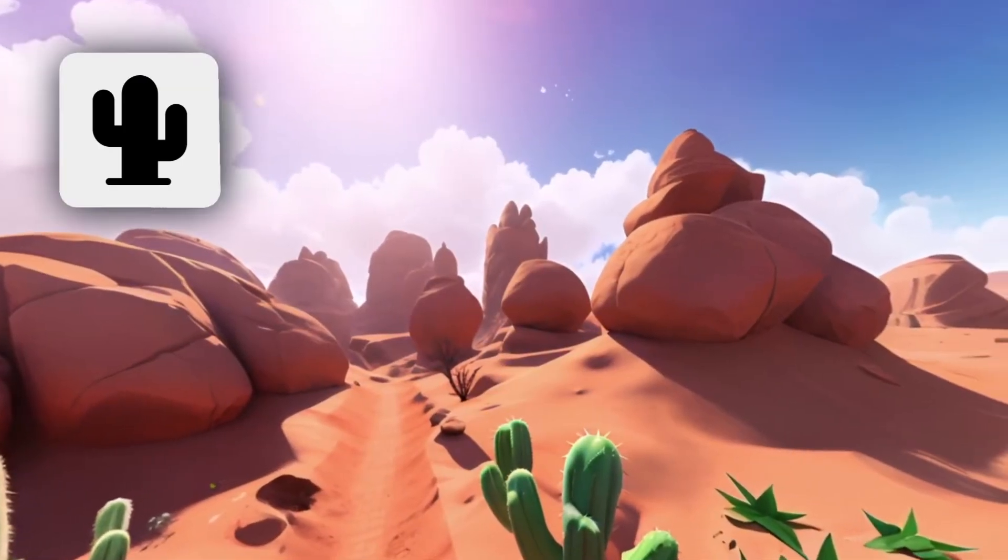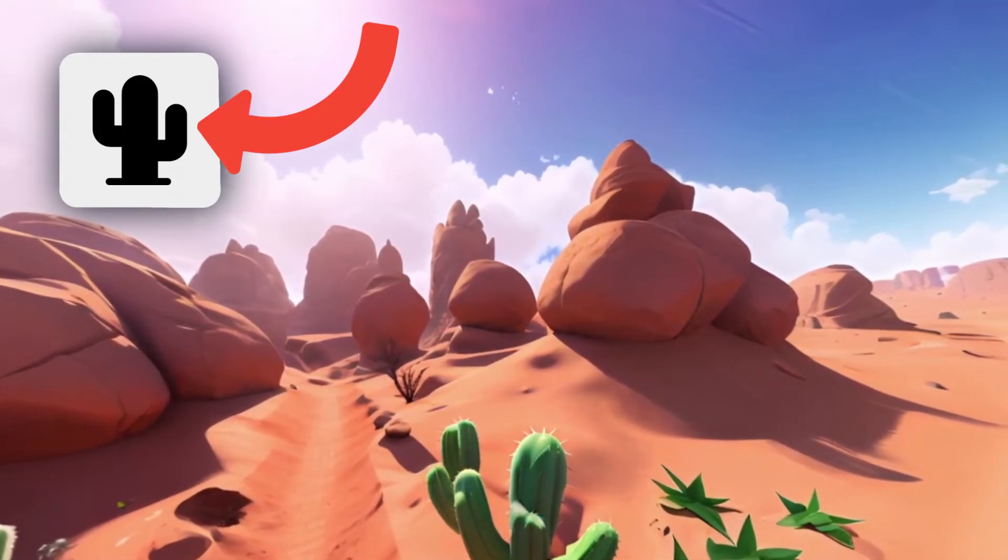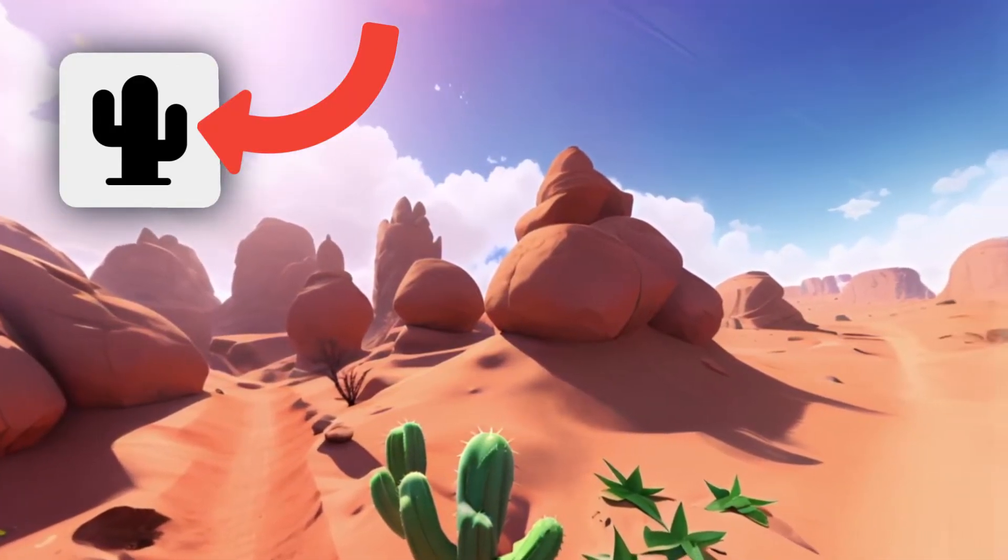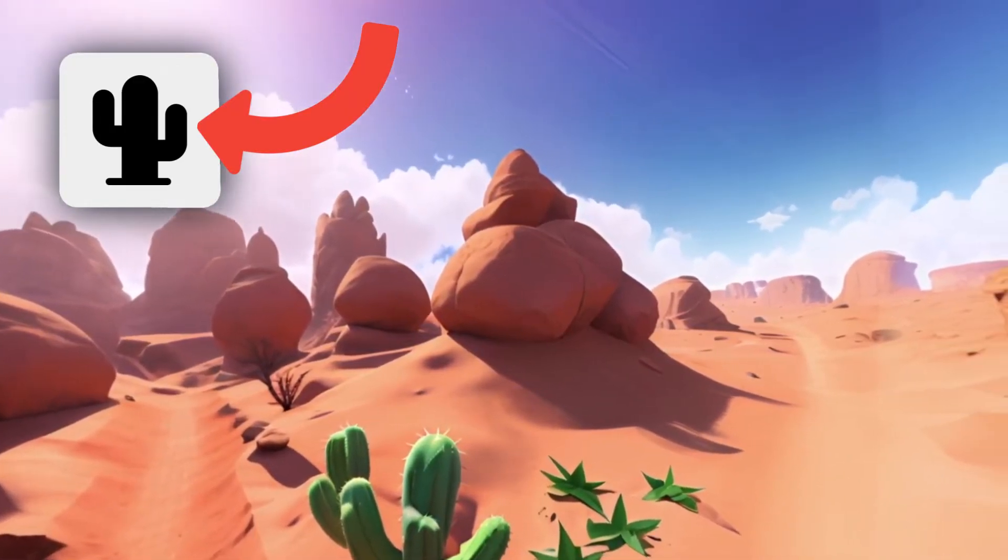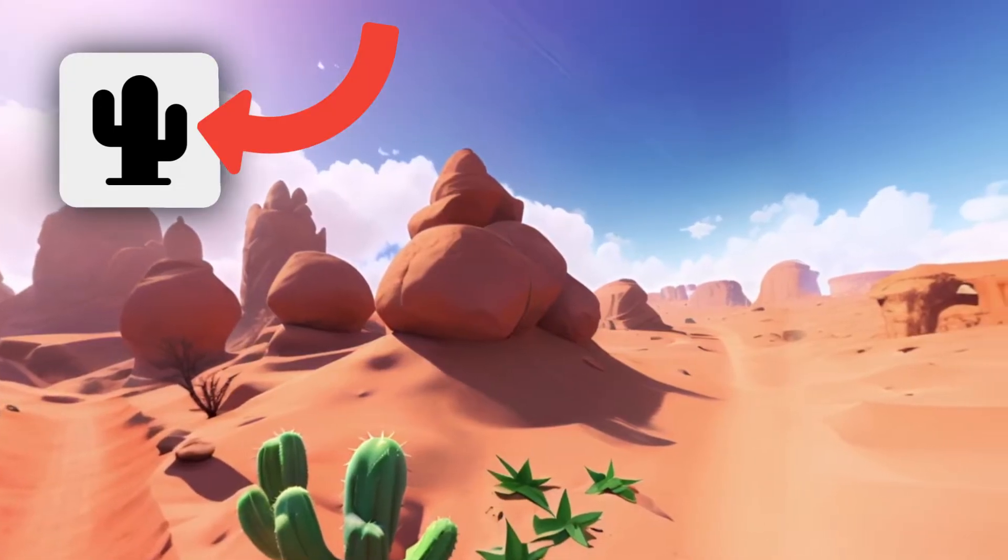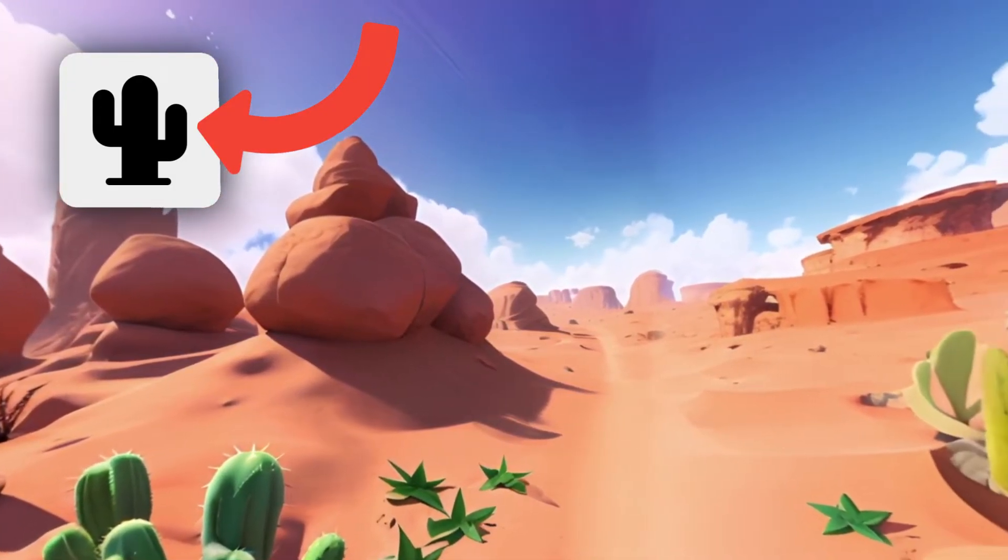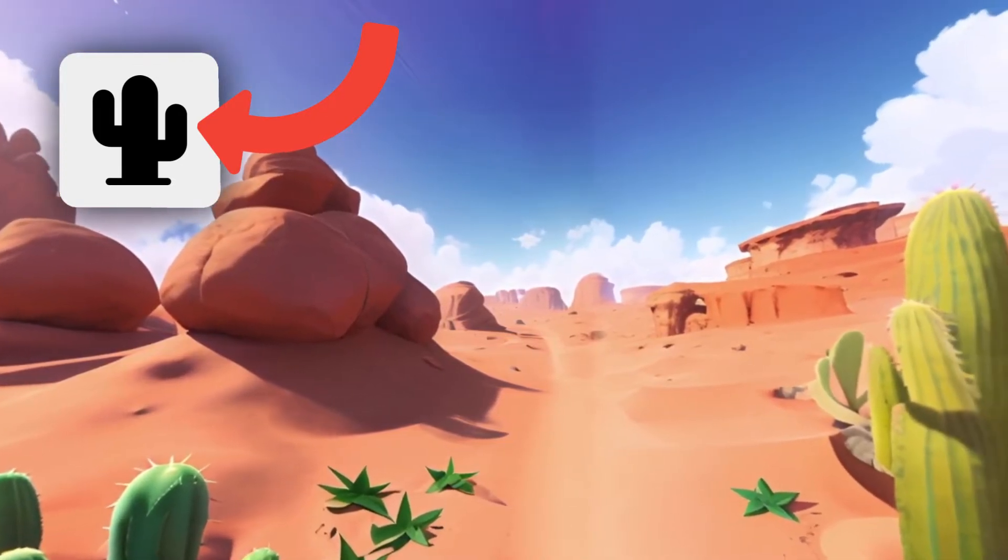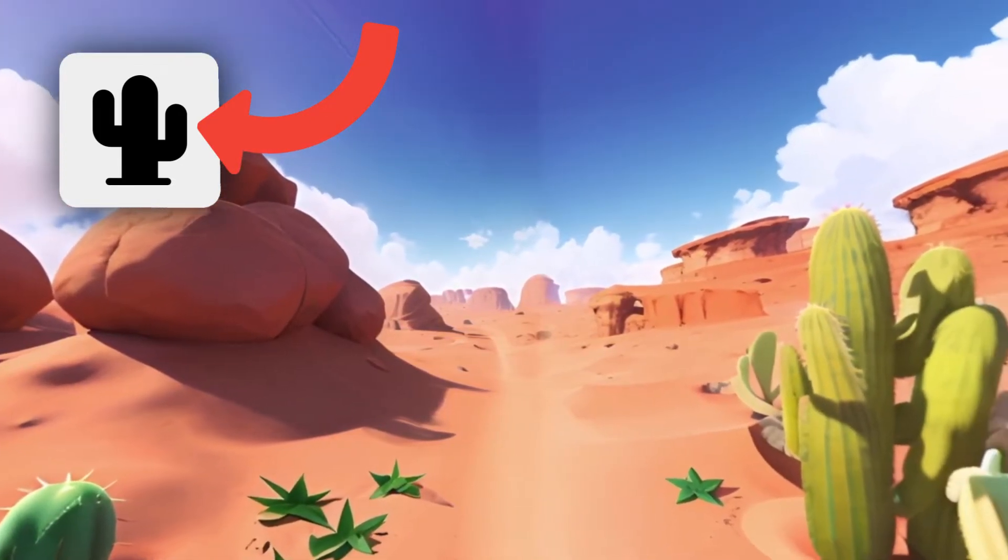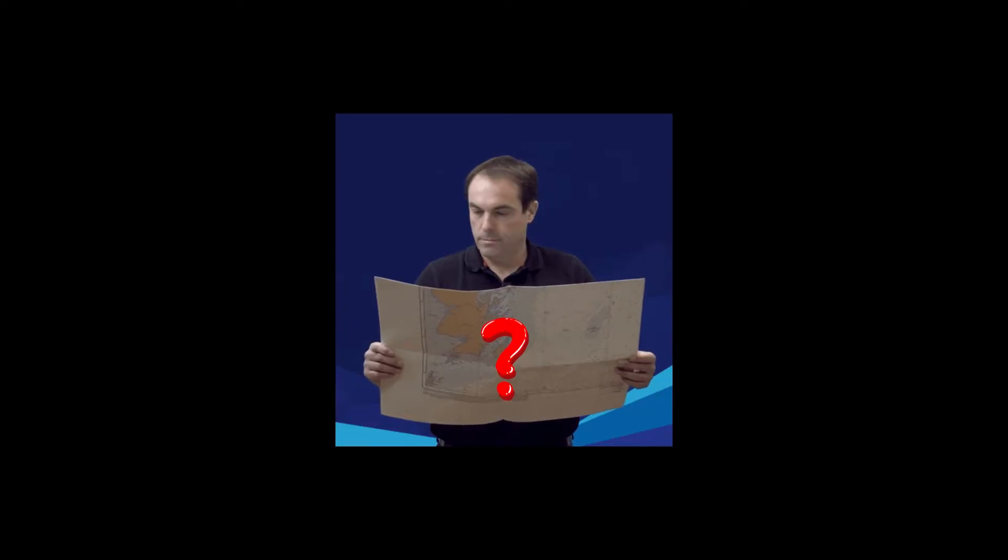The next location in the game is called Desert Canyon. Locate the icon on your map and write in its coordinates. Find it. It's located at point 8, 1.